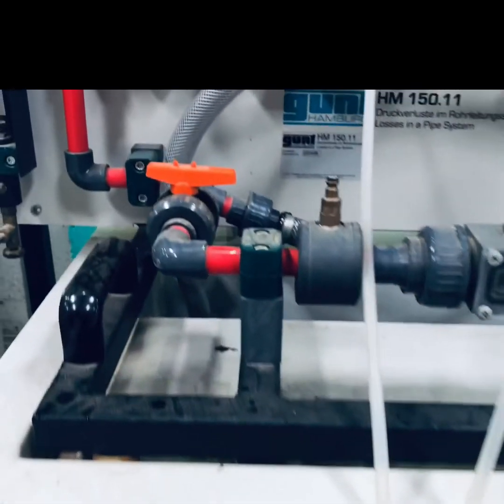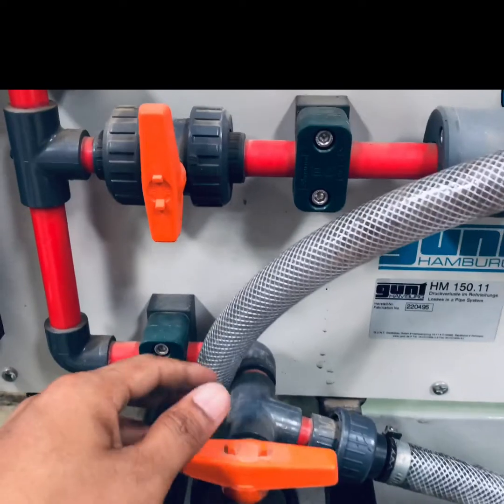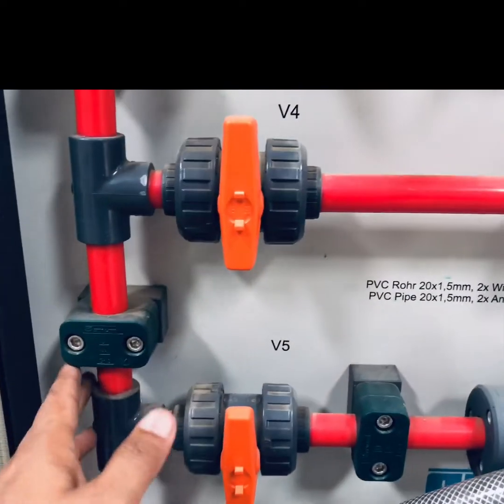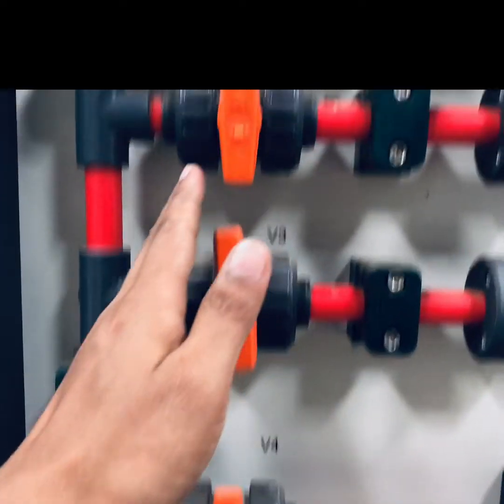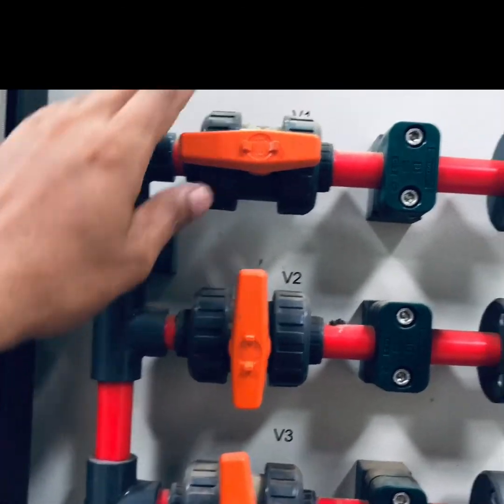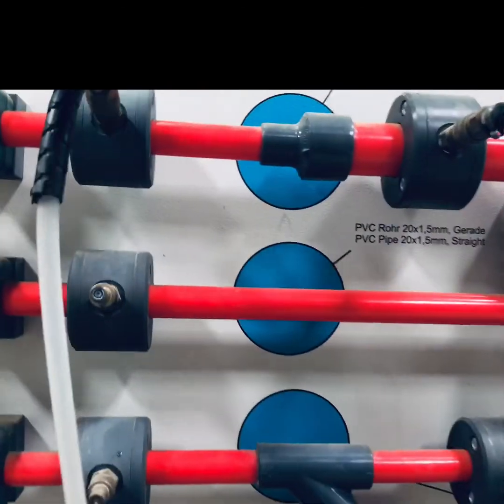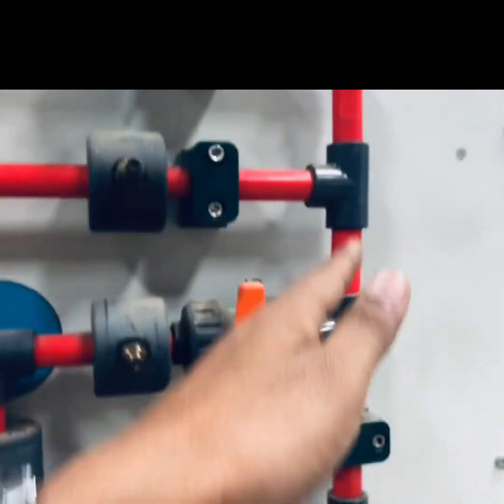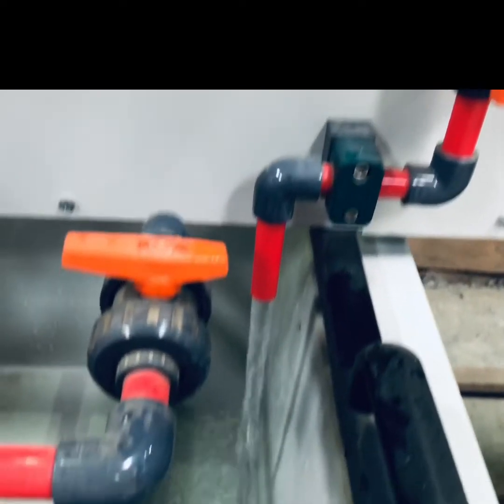Check all the valves whether they are open or closed. If we are doing an experiment for sudden contraction, the valve for sudden expansion should be open so the water goes directly into the outflow.